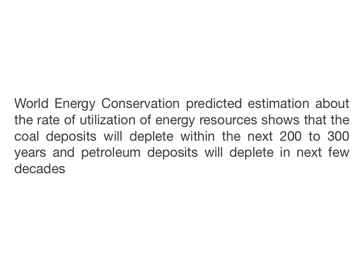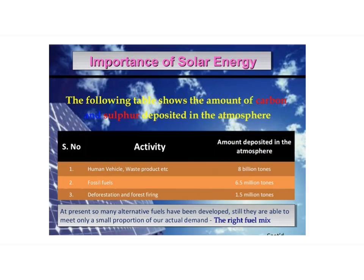Energy distribution in the world: developed countries like USA and Canada constitute only 5% of the world's population but consume 25% of the world's available energy. Energy consumed by a person in a developed country for a single day is equal to energy consumed by a single person in a poor country for one year.